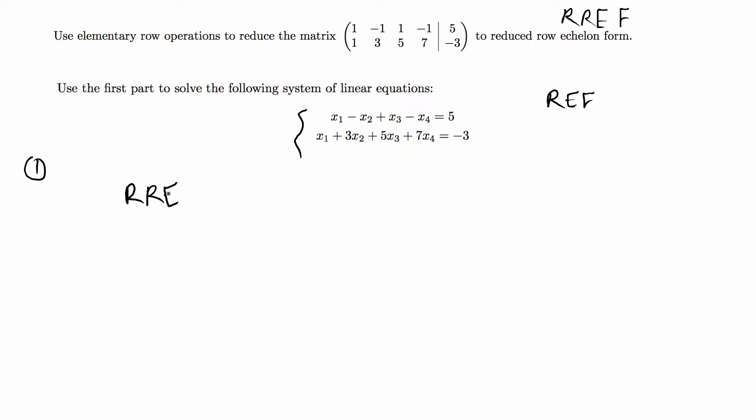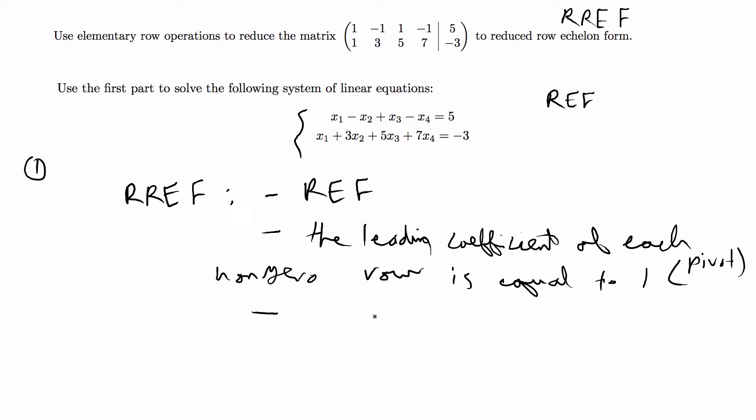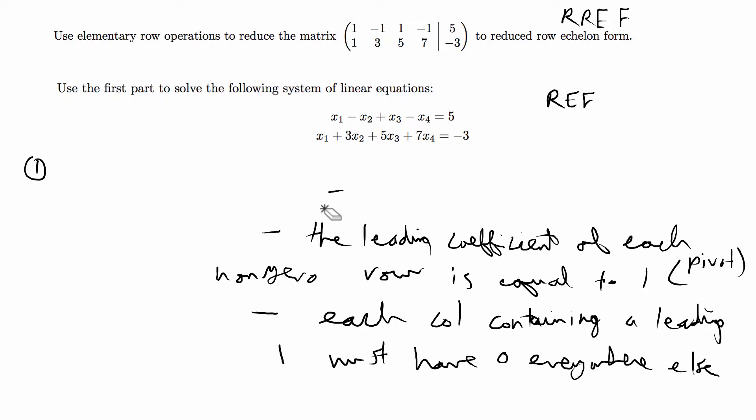Just as a recap of what reduced row echelon form is: any matrix that is in reduced row echelon form is in row echelon form as part of the definition, and in addition to that the leading coefficient of each non-zero row is equal to 1, which is called the pivot or the leading one, and each column containing a leading one must have zero everywhere else. I'm going to do an example of that in the first part.